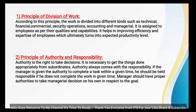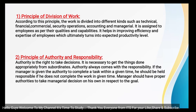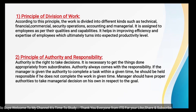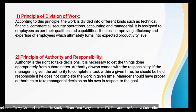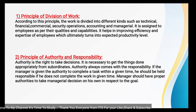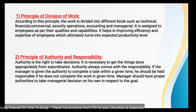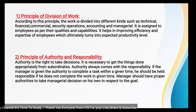The second principle is Authority and Responsibility. Authority means the right to take decisions, which is held by top-level management — chief executive officers and heads of departments. Responsibility flows from the middle and lower levels. Authority always comes before responsibility, and it is necessary to get things done appropriately from subordinates.